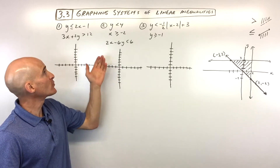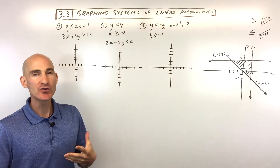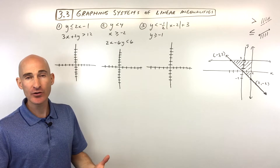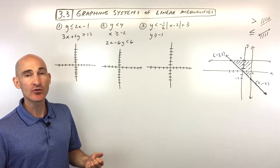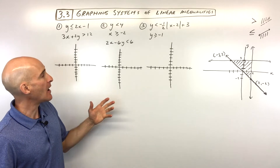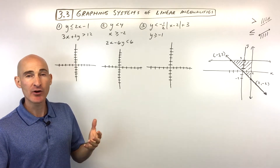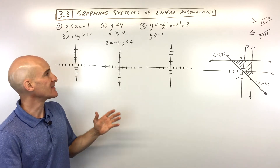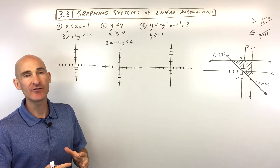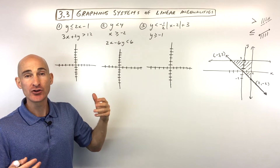Lesson 3.3. In this lesson, we're going to talk about graphing systems of linear inequalities. So far in this chapter, we've been talking about systems — solving systems of linear equations using the graphing method, using elimination and substitution methods. Now we're talking about graphing two or more inequalities on the same graph, and we're looking for that overlapping region — that overlapping set of points that makes all the inequalities in the system true.